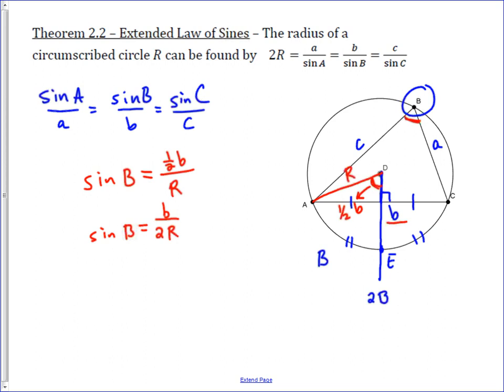Then, doing cross multiplication, we can get 2R equals b over sine of B, and then it's easy to see that this proof for the general case of angle B is going to be the exact same for angle A and angle C, and so we know then that all three of those are going to be equal to 2R. So now, if we know enough to use law of sines, we actually now know enough to do the radius of the circumcircle, so it's a very powerful extension of the law of sines.